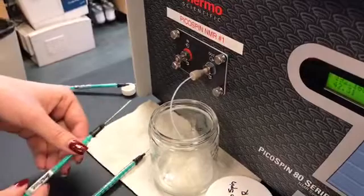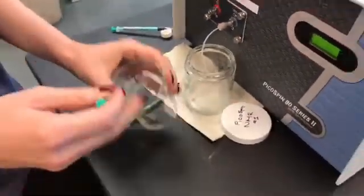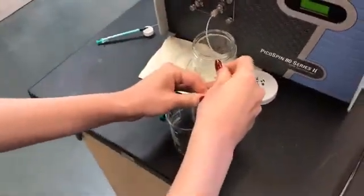The second thing we'll do is flush it with acetone, so we'll get the syringe labeled acetone, and we'll draw up again about 0.4 milliliters of acetone.